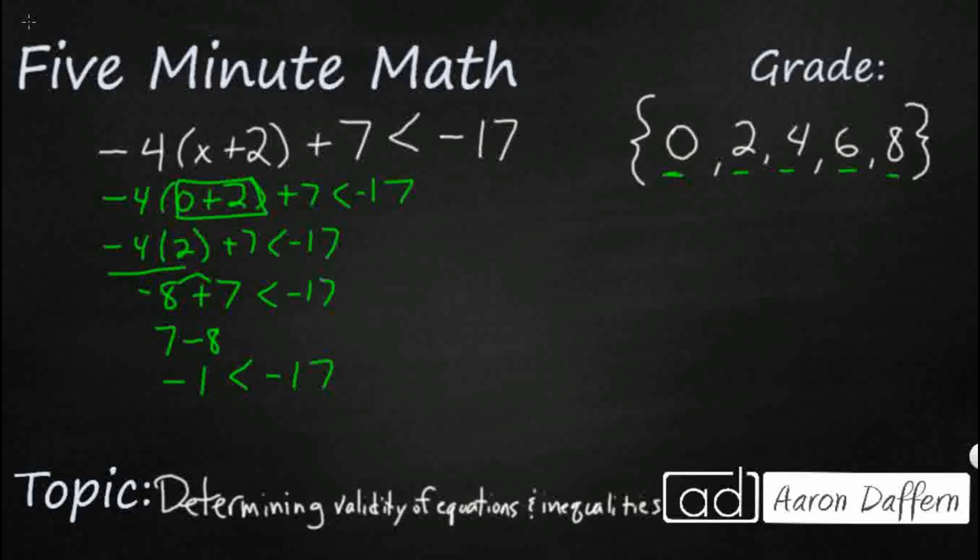Now remember, we have our number line over here. Let's see if we can get that number line working right here. So we're going to have 0 right here. And we've got negative 17. So less than negative 17 is going to be over here. And we've got a negative 1. So this does not work. So 0 is not correct.